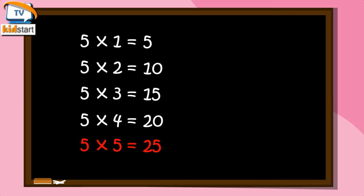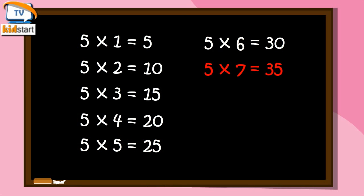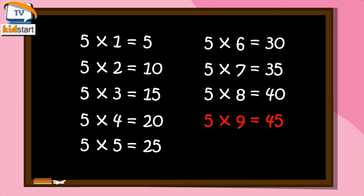Five Fives are Twenty-Five. Five Sixes are Thirty. Five Sevens are Thirty-Five. Five Eights are Forty. Five Nines are Forty-Five. Five Tens are Fifty.